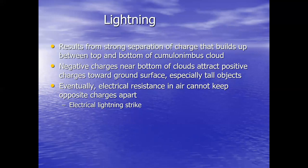What is lightning? Lightning results from the separation of charges that builds up between the top and bottom of a cumulonimbus cloud. Negative charges near the bottom of the cloud attract positive charges toward the ground surface, especially where there are tall objects like towers or lightning rods. Eventually the electrical resistance in air can't keep the opposite charges apart — air is not a good conductor — so those charges build up to incredible strength. When they can't be kept apart any longer, there's a lightning strike, which is why lightning can be so deadly.